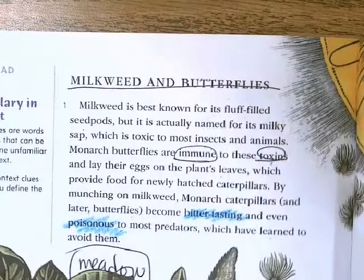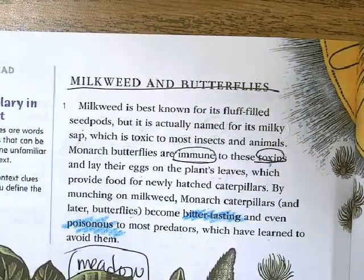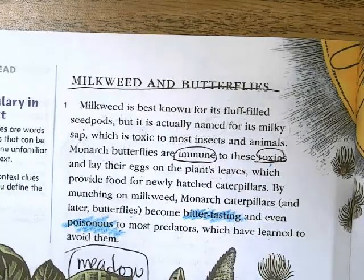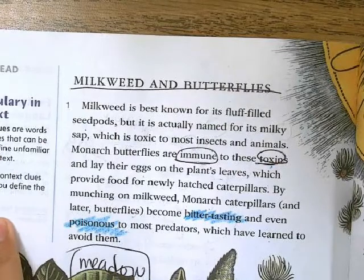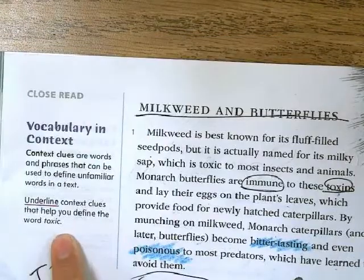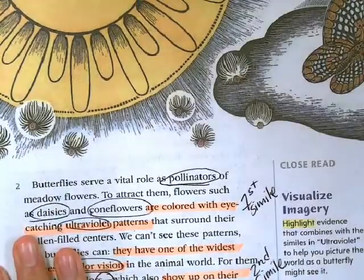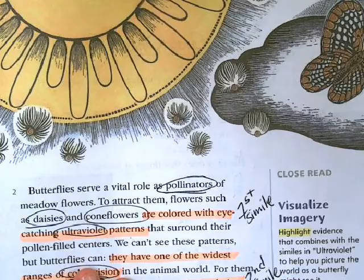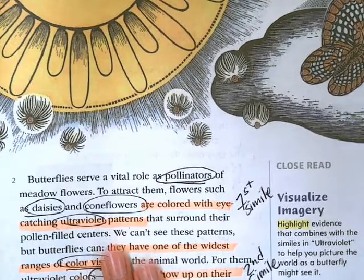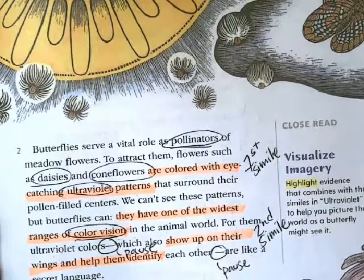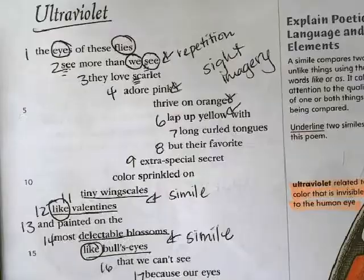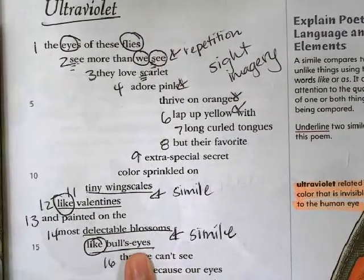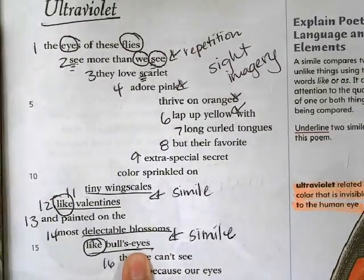Then we read the prose piece of literature — the two paragraphs, Milkweed and Butterflies, that are on the next two pages. We were able to identify the context clues that helped us define 'toxic' and also highlight the evidence of the ones that were similar to the similes in Ultraviolet. We underlined the similes: 'tiny wing scales like valentines' and 'delectable blossoms like bullseyes.'